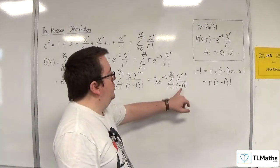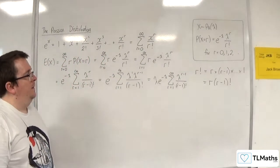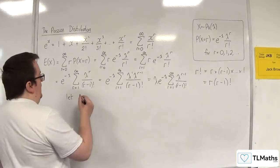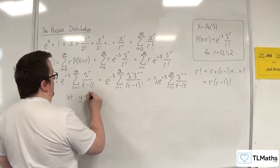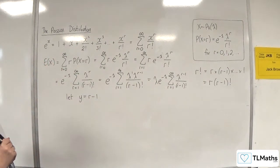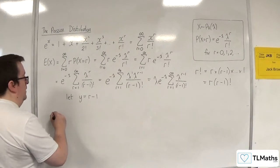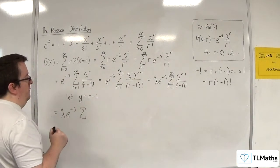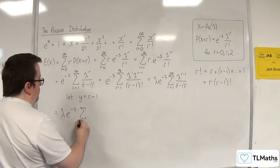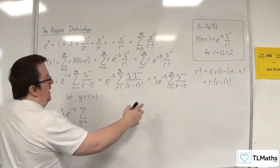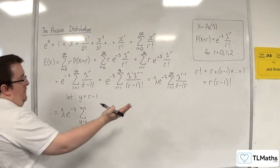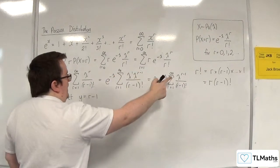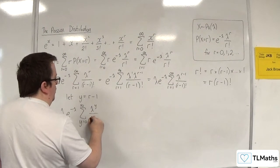At this stage I'm going to introduce a substitution. Let y equal r minus 1. Now if y equals r minus 1, I have lambda times e to the minus lambda times the summation. When r equals 1, y equals 0, and as r goes to infinity y goes to infinity as well. So the sum runs from y equals 0 to infinity of lambda to the y over y factorial.